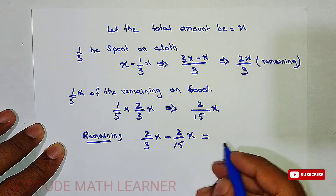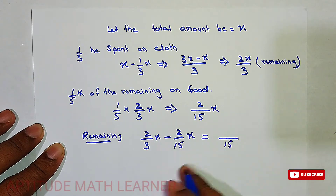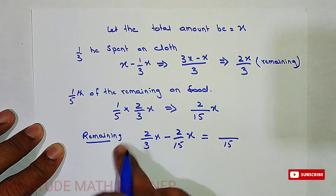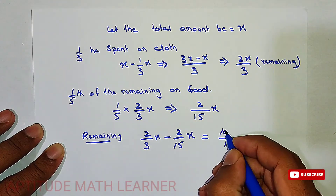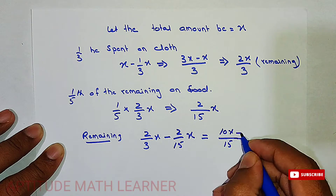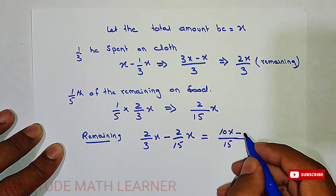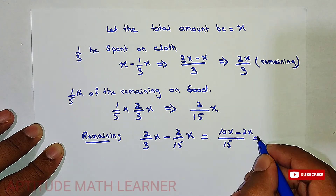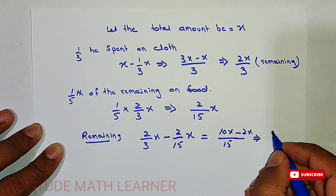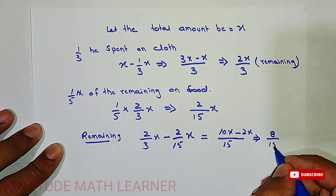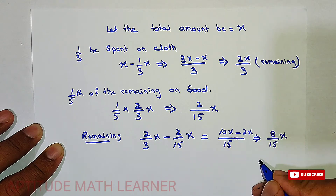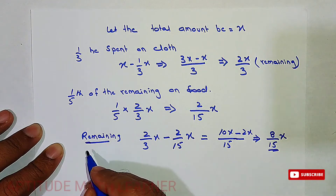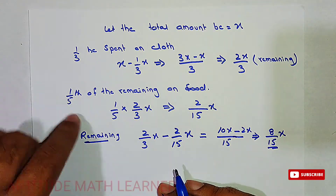Taking LCM of 15: 15 divided by 3 is 5, and 5 multiplied by 2 gives us 10x. So 2x/3 minus 2x/15 becomes 10x/15 minus 2x/15, which equals 8x/15. This is the remaining amount after spending on food.